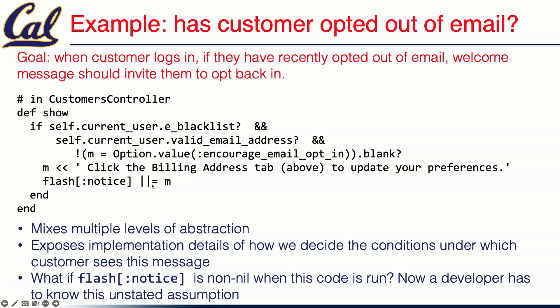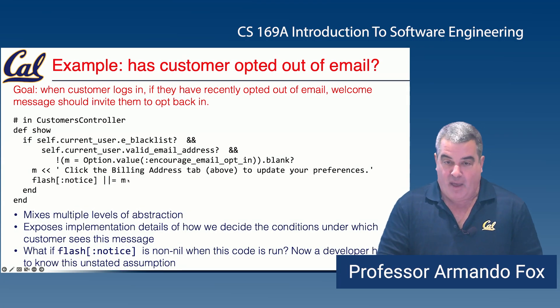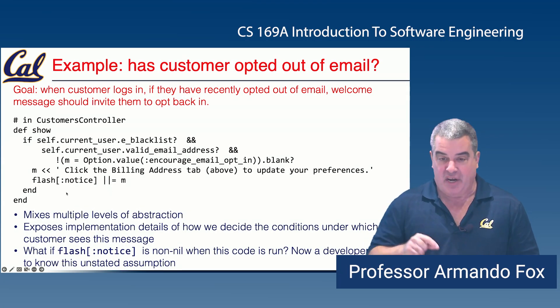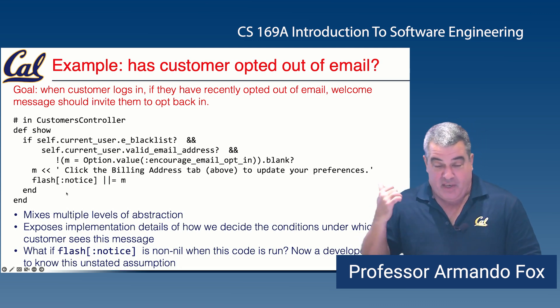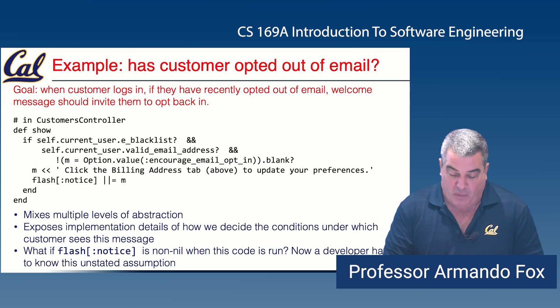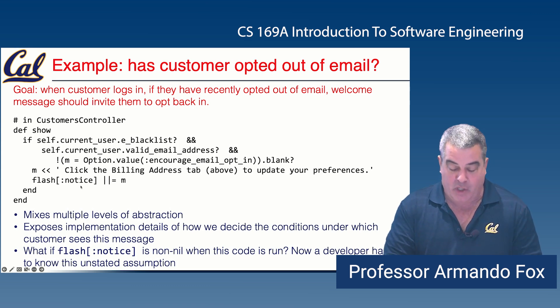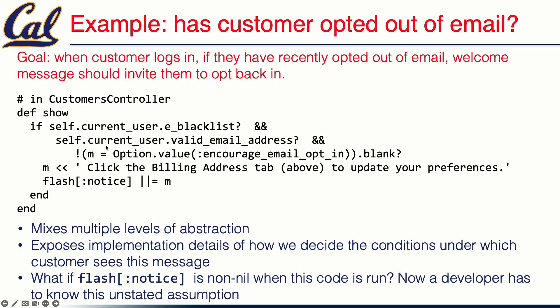There's also a hidden assumption. Look at the way flash notice is set using the Ruby idiom of double-bar-equals. What that means is if flash notice is nil, it will be assigned the message; but if it's not nil, its value won't change. So this code is only correct if I can assume flash notice has no value before this action gets called — and I can't really make that assumption. Maybe there's a controller before-filter that already put something in flash notice, in which case this code just silently won't work. Now the developer has to know this unstated assumption, and you've exposed information that isn't really the controller's job to know.